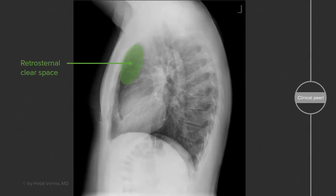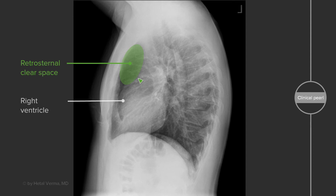It's still important to recognize the anatomy on this view, so let's take a look. We should have a retrosternal clear space. Right here we have the bony sternum, and then just behind it you should have an air-filled space between the sternum and the heart and mediastinum. The anterior aspect of the heart on the lateral view represents the right ventricle.